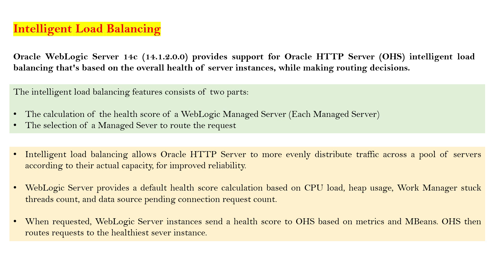Intelligent load balancing allows Oracle HTTP Server to more evenly distribute traffic across a pool of servers according to their actual capacity for improved reliability. WebLogic server provides a default health score calculation based on CPU load, heap usage, work managers, stuck thread count, and data source pending connection request count. Each managed server calculates the health of these parameters and coordinates with OHS, which then decides to which application server it has to send the request.